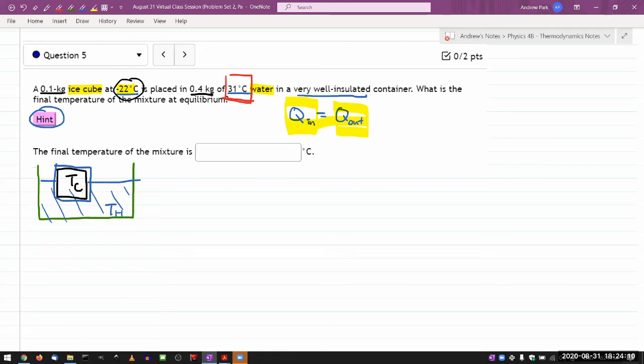So with that, let me start writing down the equations that need to be solved under the assumption that all of the ice will melt. Now, if this assumption is somehow wrong, then we need to come back and redo the question under the new assumption that not all of the ice will melt. So let me get started here. So if all of the ice will melt, then the Q in will have three components.